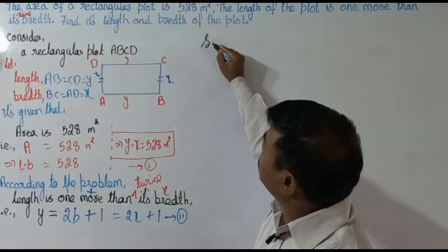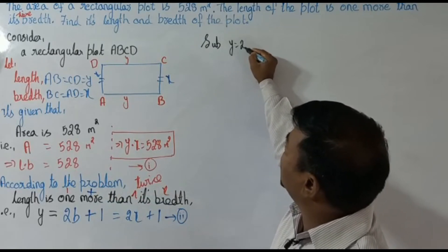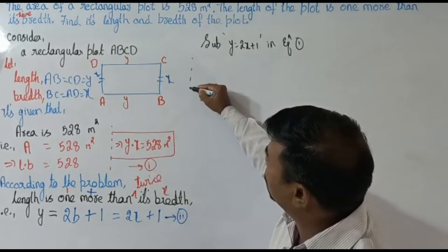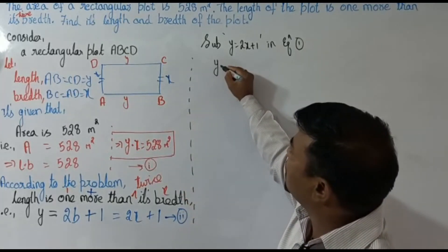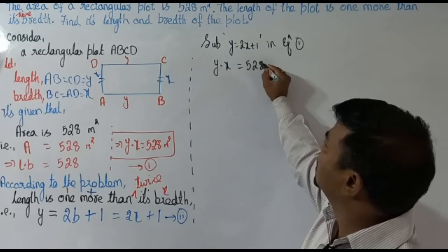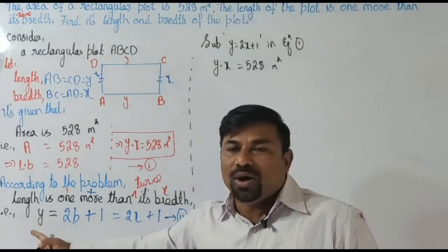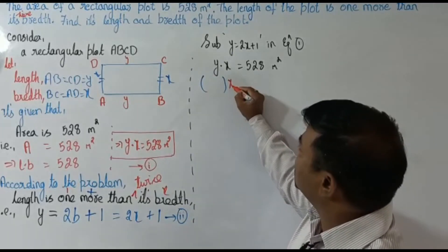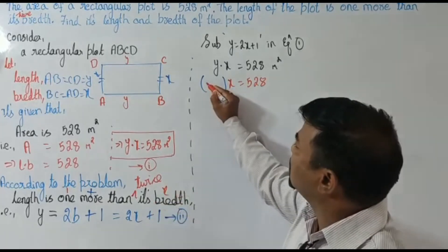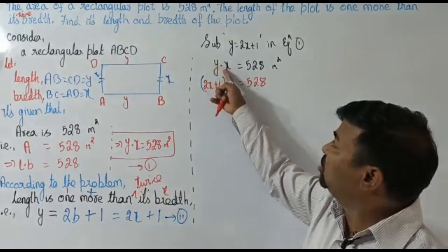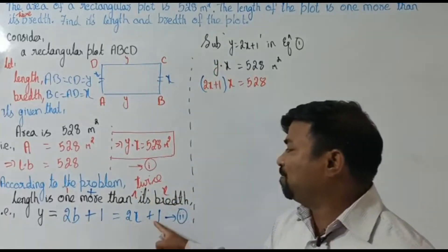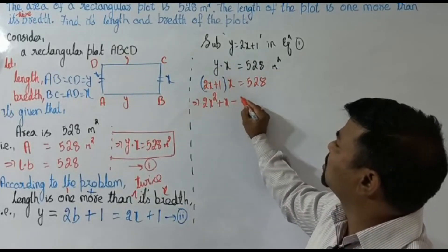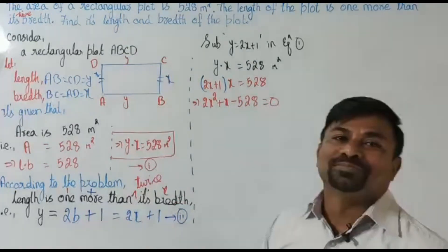Substituting y equals x plus 1 into equation one: y into x equals 528, so (x+1) into x equals 528. Simplifying: x squared plus x equals 528, which gives x squared plus x minus 528 equals 0. We now have a quadratic equation under one variable.